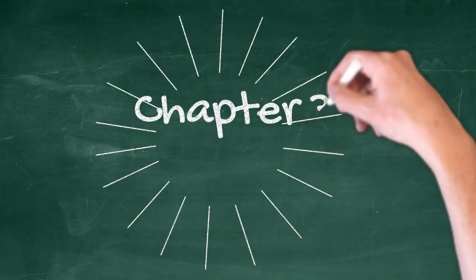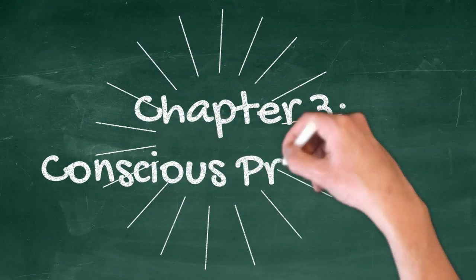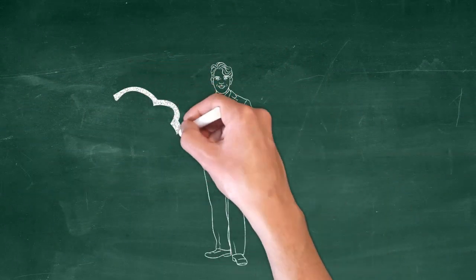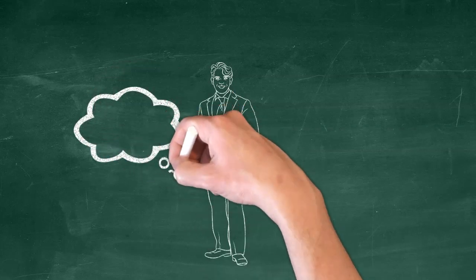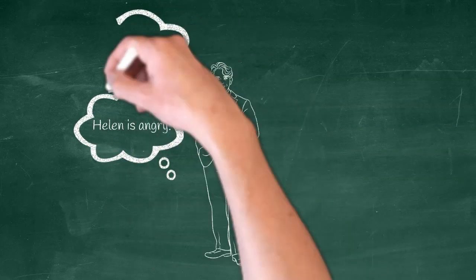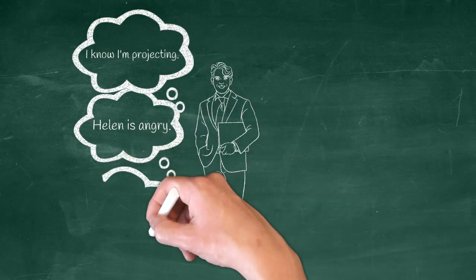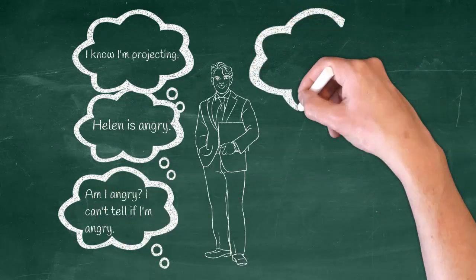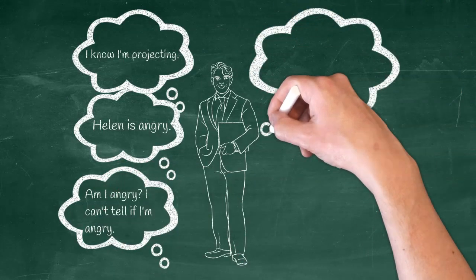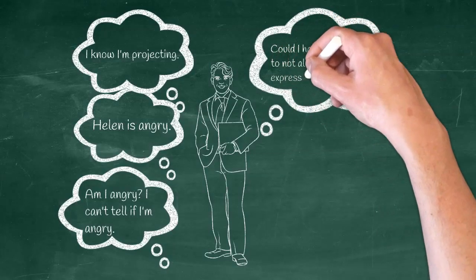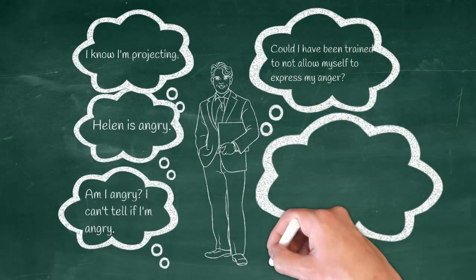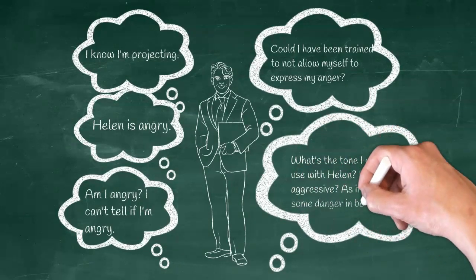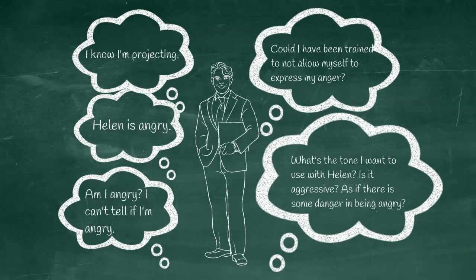Chapter 3. Conscious Projection. Now that Brad knows that he's often and probably projecting, he can begin an inquiry any time he wants to tell someone how he thinks they're feeling. He can look for little cues. Does he have urgency to tell Helen that she's angry? As if she'd be in danger for being angry. This is a sign that Brad might feel like he's in danger when he's angry. And this can start deeper and deeper inquiries and promote Brad's own self-intimacy with his super ego.